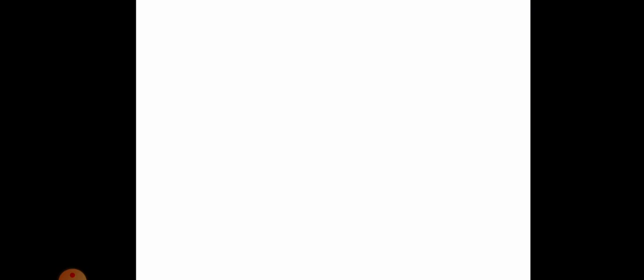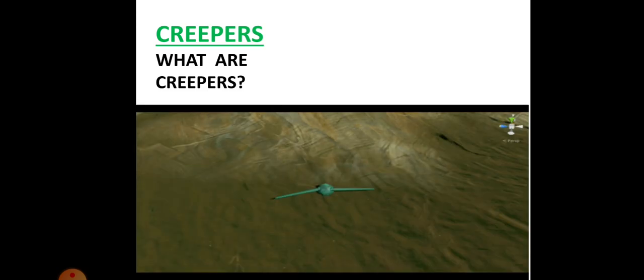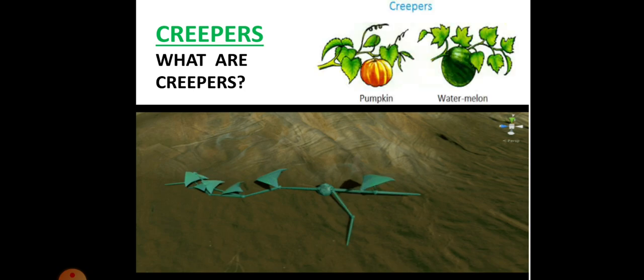Now moving to the next type of plant. We have the creepers. Now what are creepers? Creepers have soft green weak stem. They grow along the ground. I will just show you an animated pic of it just to make you understand how a creeper grows along the ground. Some of the examples are pumpkin, watermelon. Did you get it?